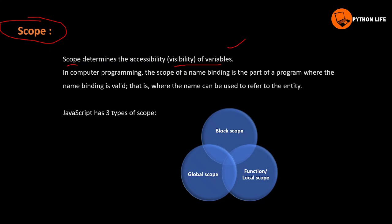In computer programming, the scope of a name binding is the part of the program where the name binding is valid. A name binding — a variable — has a scope. That is where the name can be used to refer to the entity.